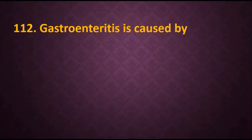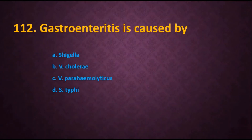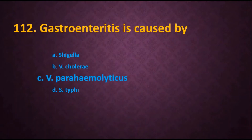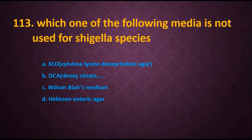Question 112: Gastroenteritis is caused by — options are: A) Shigella, B) Vibrio cholerae, C) Vibrio parahemolyticus, D) Salmonella typhi. The answer is Vibrio parahemolyticus, so option C is the right answer. Gastroenteritis is caused by Vibrio parahemolyticus, whereas Vibrio cholerae causes cholera.